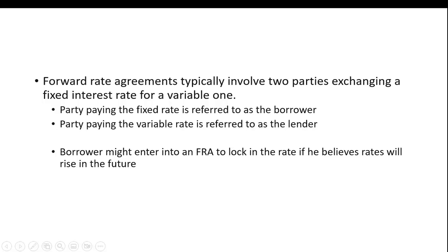Forward rate agreements typically involve two parties exchanging a fixed interest rate for a variable one. The party paying the fixed rate is referred to as the borrower, and the party paying the variable rate is referred to as the lender. The borrower, for example, might enter into an FRA to lock in the rate if he believes that rates will rise in the future.